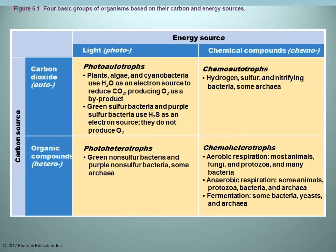Plants, algae, and cyanobacteria — organisms capable of carrying out photosynthesis — get their energy from light, so they are phototrophs. Because they can also get their carbon source from carbon dioxide, they are known as photoautotrophs. Some archaea, green non-sulfur bacteria, and purple non-sulfur bacteria cannot use carbon dioxide as their carbon source; they must use organic compounds, so they are photoheterotrophs.